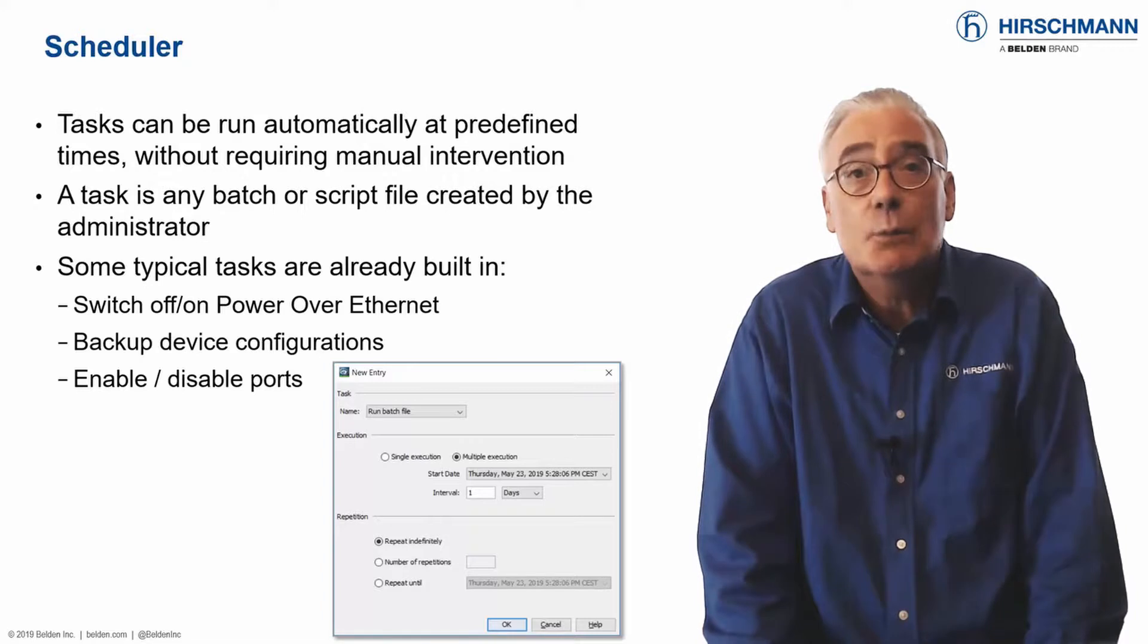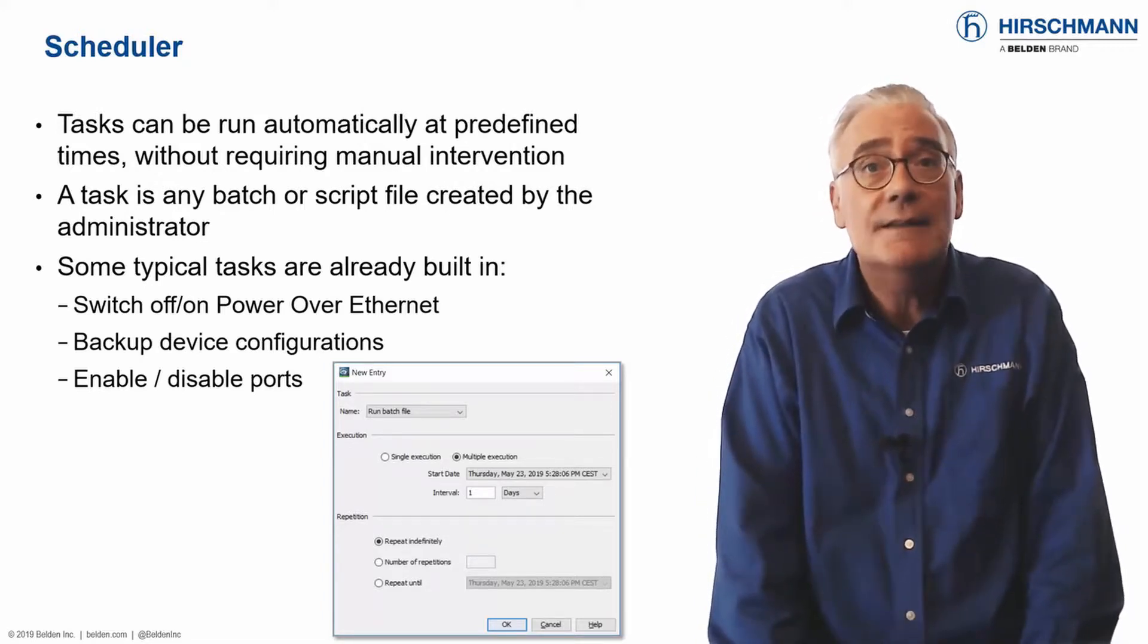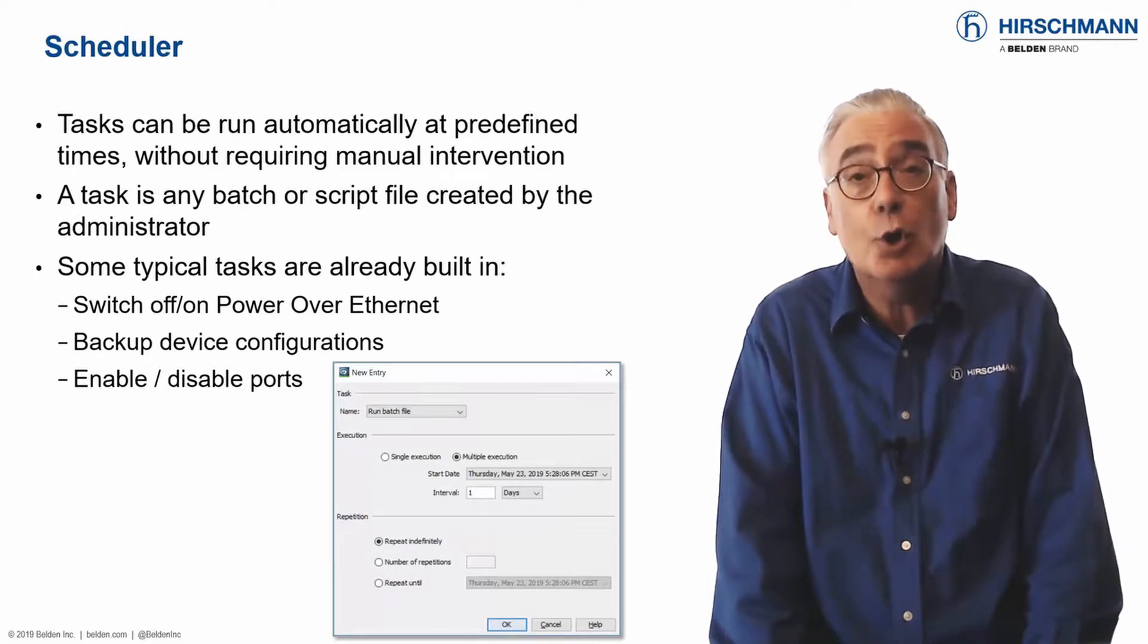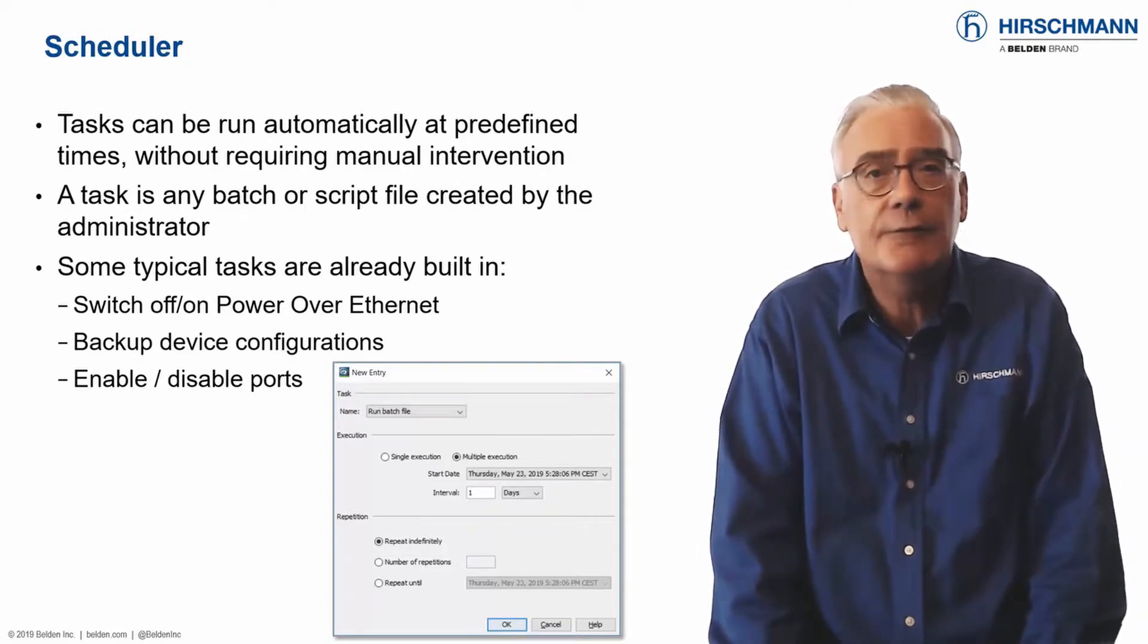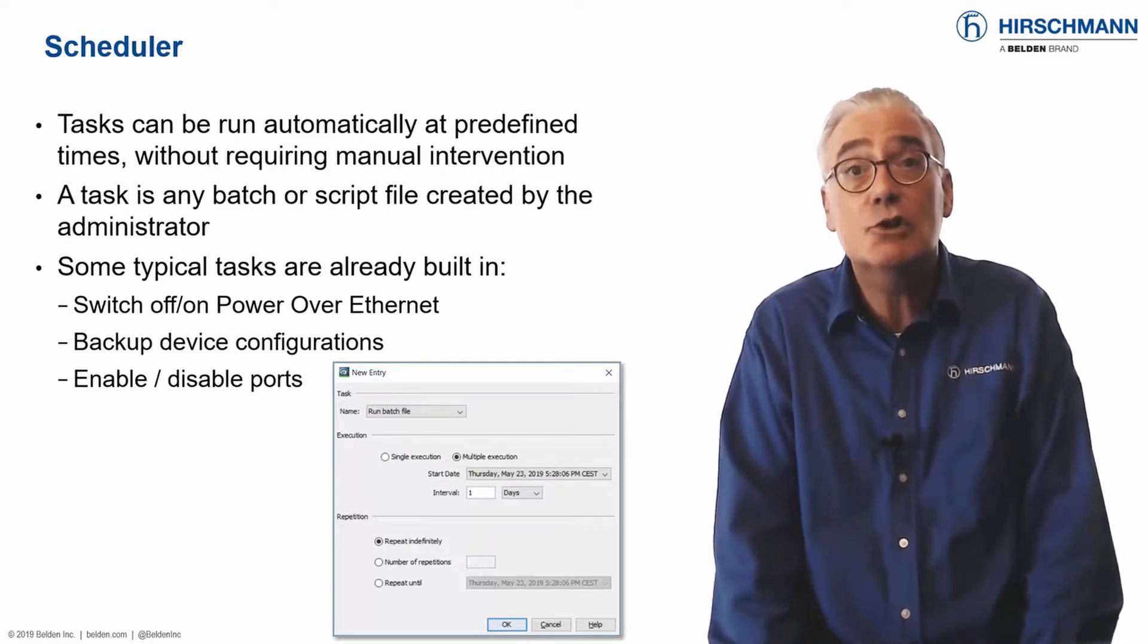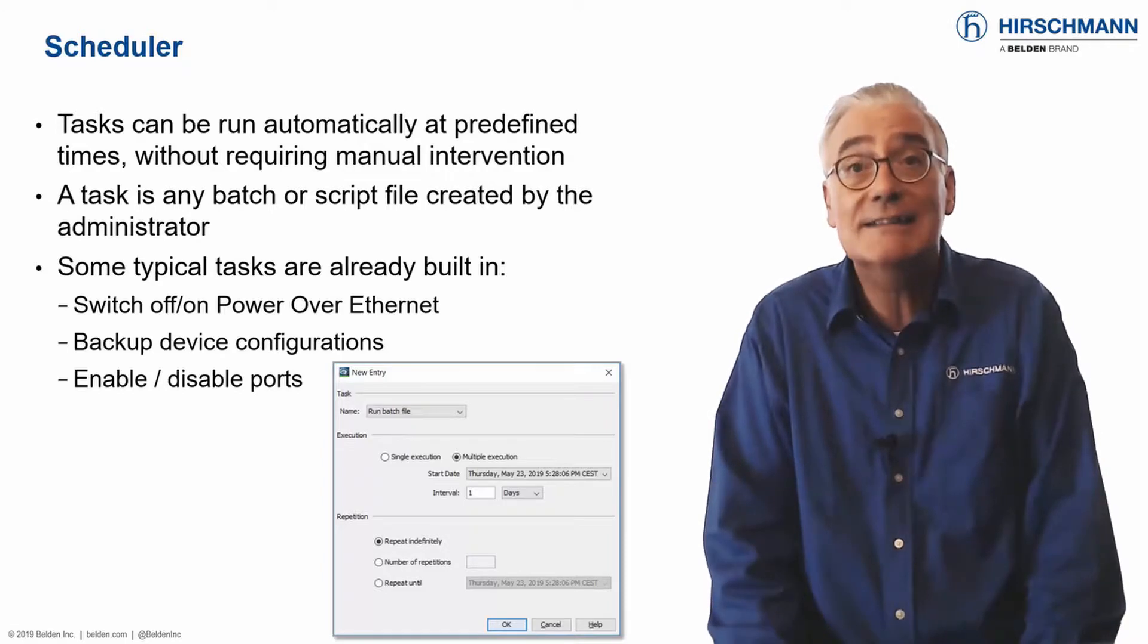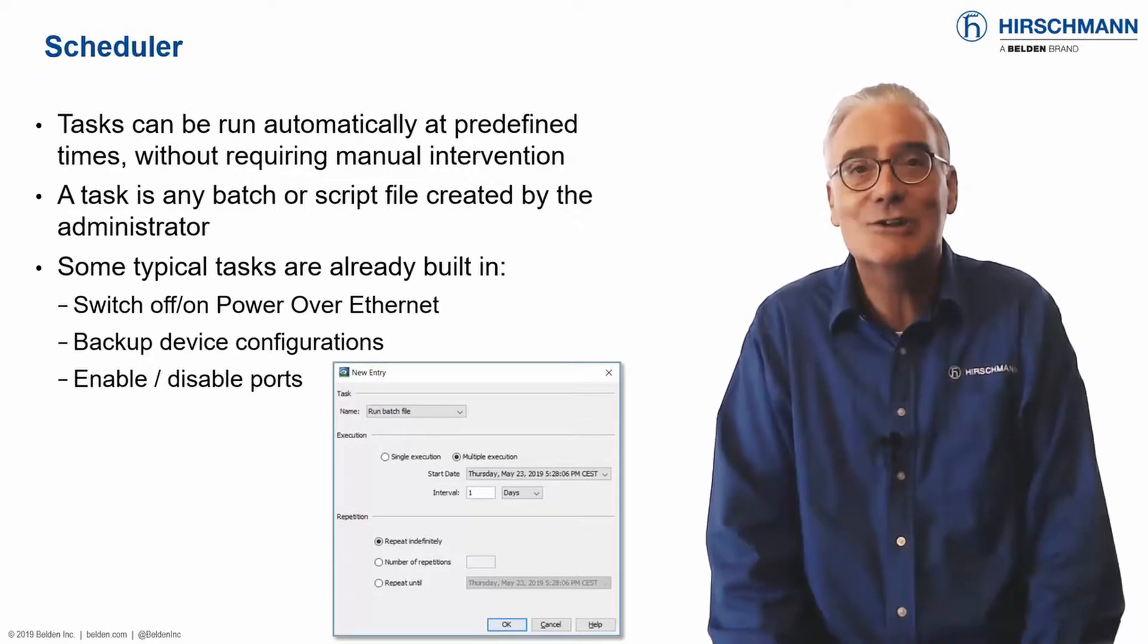For other tasks which may be specific to industrial networks, the scheduler can run batch or script files created by the network administrator. Wildcards are supported for elements like file names or IP addresses. By using the scheduler you can rest assured that tasks are running smoothly in the background without your personal intervention.